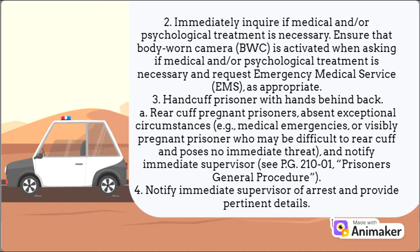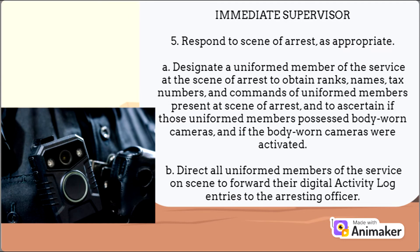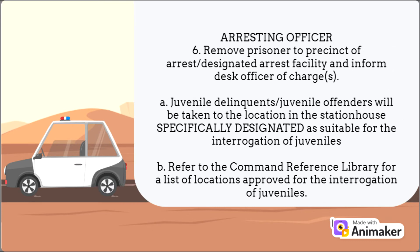Step 4: notify immediate supervisor of arrest and provide pertinent details. Immediate supervisor — Step 5: respond to scene of arrest as appropriate. Designate a uniformed member of the service at the scene to obtain ranks, names, tax numbers, and commands of uniformed members present, and to ascertain if those members possessed body-worn cameras and if the cameras were activated. Direct all uniformed members to forward their digital activity log entries to the arresting officer. Step 6: remove prisoner to precinct of arrest or designated arrest facility and inform desk officer of charges. Juvenile delinquents and juvenile offenders will be taken to the location specifically designated for the interrogation of juveniles; refer to the command reference library for a list of approved locations.